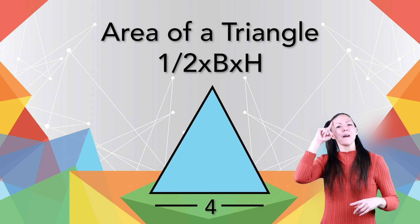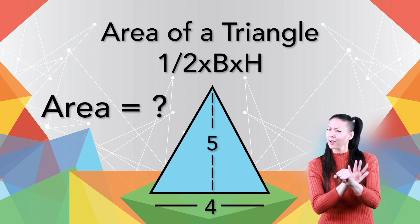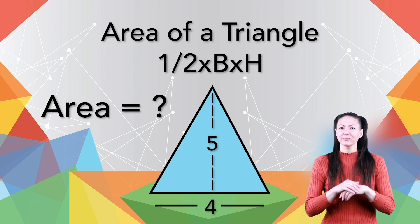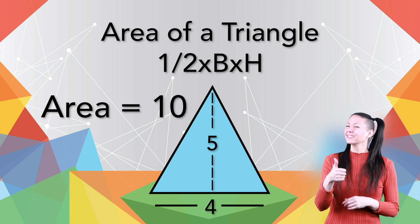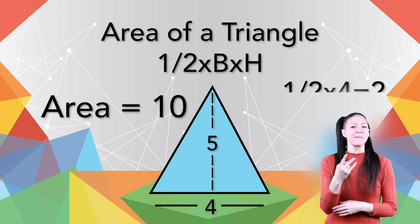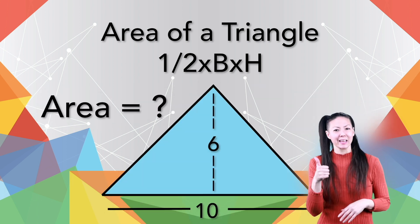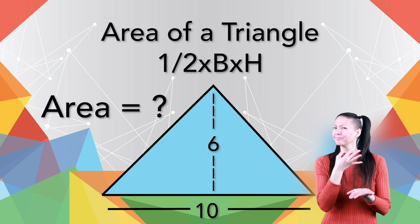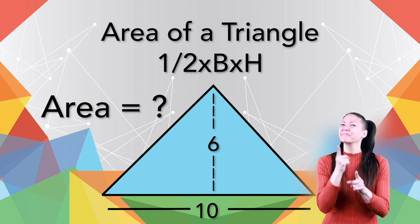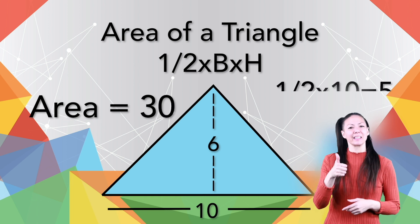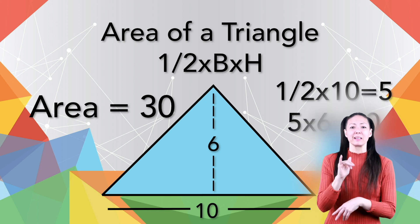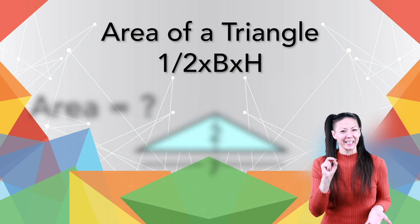This triangle has a base of four and a height of five. Can you figure out its area? If you said 10, you're right. Half of four is two, times five equals 10. How about this one? That's right, 30. Half of 10 is five, multiplied by six, that's 30. And this one?